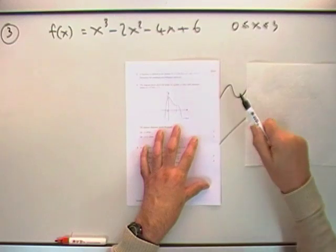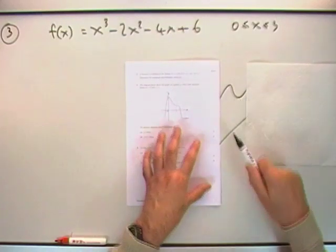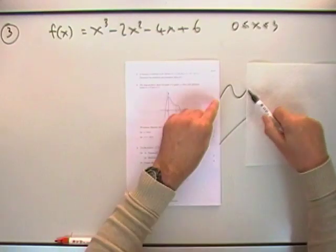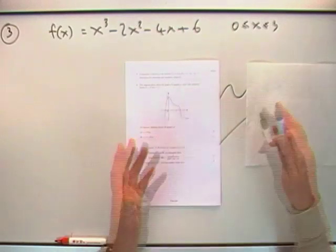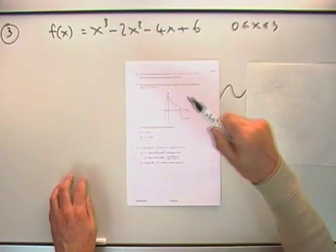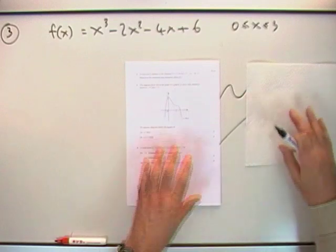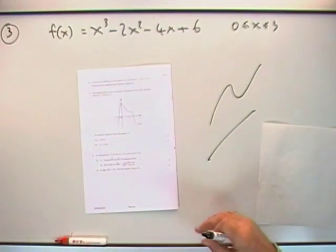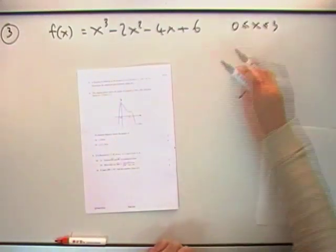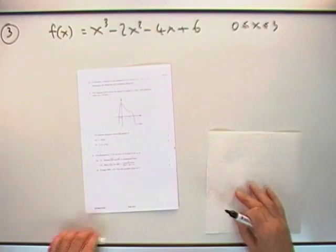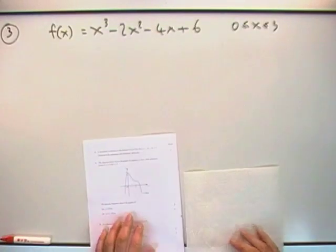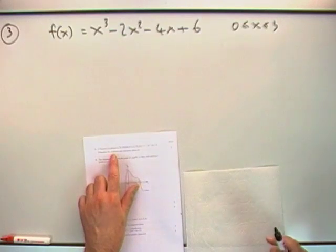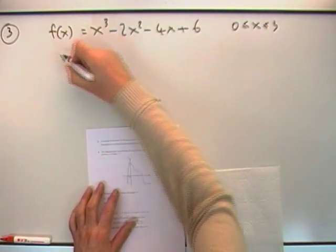So strictly speaking, all you've got to do with this question is identify any turning points where it could exceed the boundaries, and then just compare all your answers. So you don't need to do a nature table, not for this one. Strictly speaking mathematically, the nature of the turning points is unimportant if you're just wanting maximum minimum values.